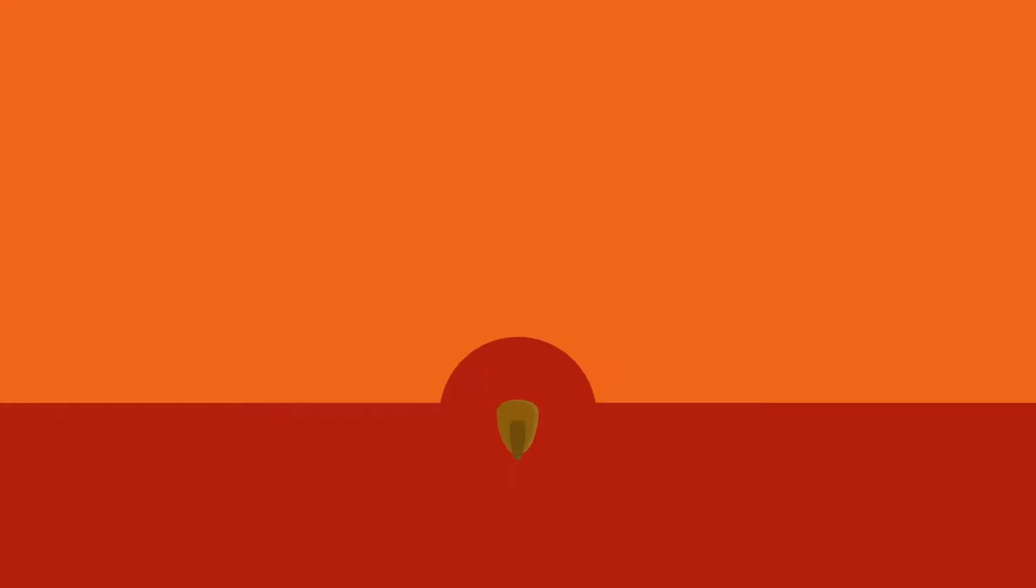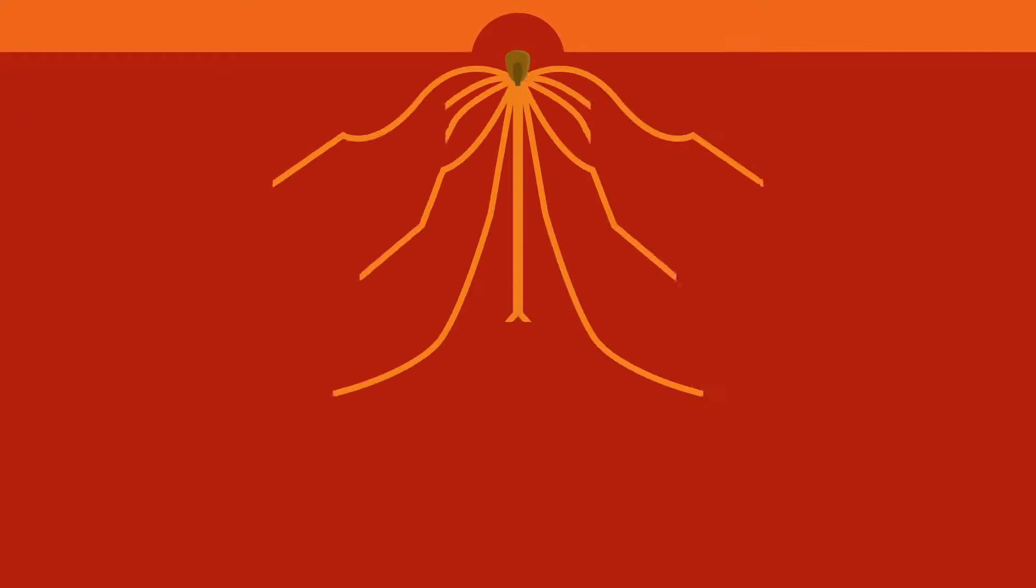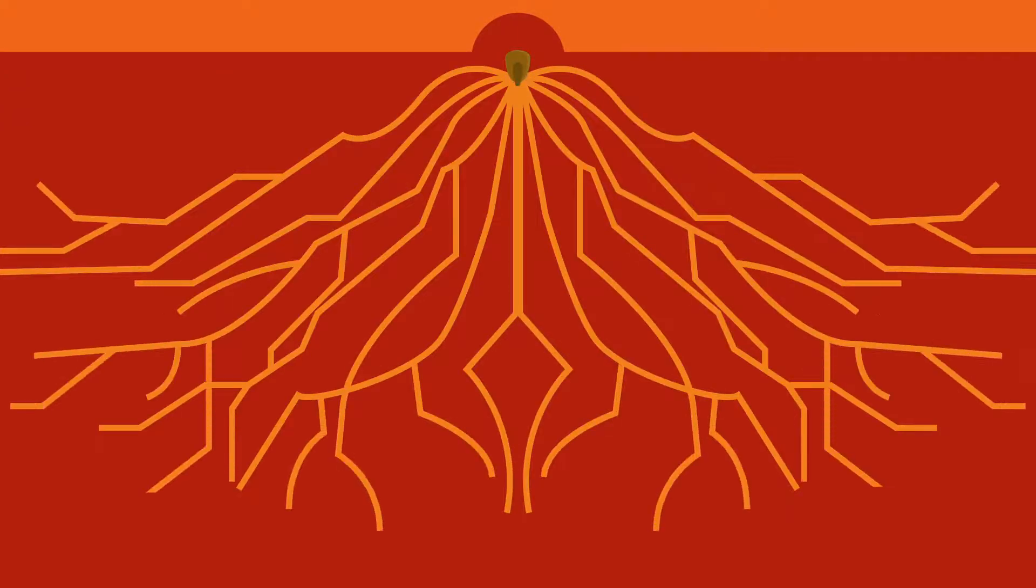Once it's underground, Vibrance gets to work immediately by preventing seed infection. Then, after germination, it increases rooting power on every level.